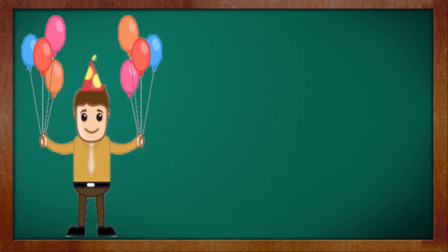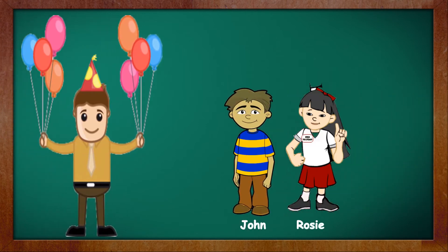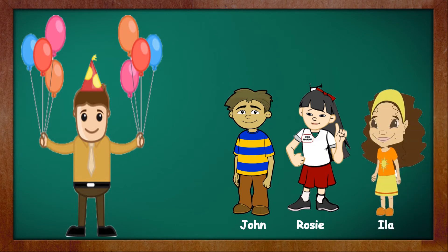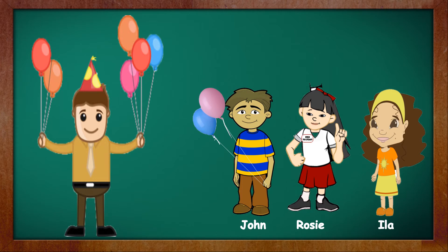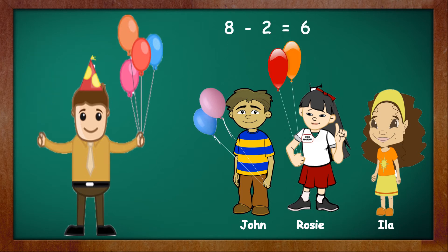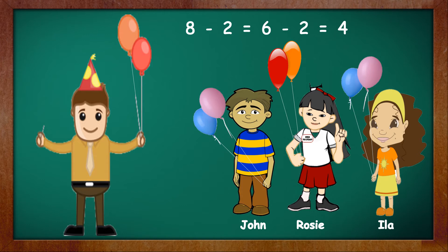Now let's see another example. A balloon man is here with eight balloons, and three children — John, Rosie, and Ila — are here to buy the balloons from him. He wants to share the balloons equally among the children, so he gives two balloons to John and is left with six balloons. Then he gives two balloons to Rosie and he is left with four balloons. He gives two balloons to Ila and now he is left with two balloons.